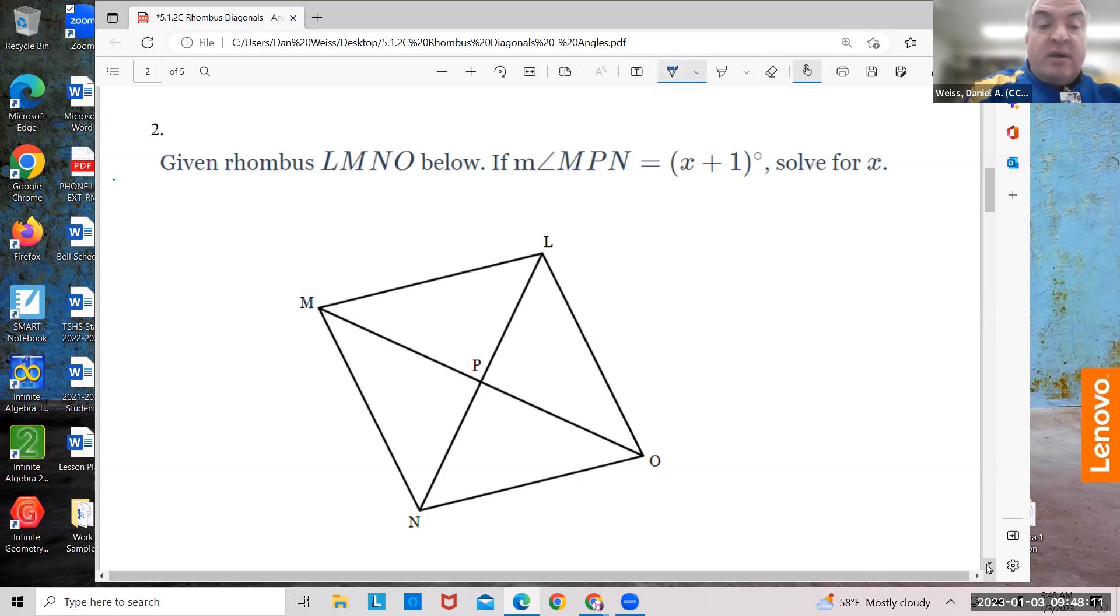Now, it says measure angle MPN. What's MPN? Well, start at M, let's go to P, and then we go from there to N. Now, here's something you need to know. In a rhombus, only in a rhombus, these angles, the angles where the diagonals cross, they're all 90 degrees. So this is 90 degrees, this is 90 degrees, this is 90 degrees, and this is 90 degrees. They're all 90 degrees. All of those angles are 90 degrees.